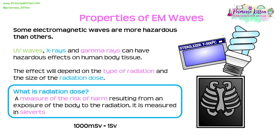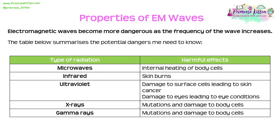Radiation dose is a measure of the risk of harm resulting from exposure of the body to radiation, and is measured in sieverts. Note that 1000 millisieverts equals one sievert. Electromagnetic waves become more dangerous as frequency increases. We need to know: microwaves can cause internal heating of body cells; infrared can cause skin burns; ultraviolet can damage surface cells leading to skin cancer, premature aging, and eye conditions; X-rays and gamma rays can cause mutations and damage to body cells.